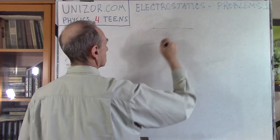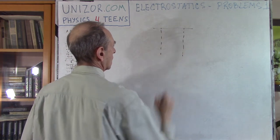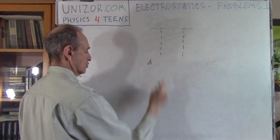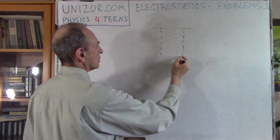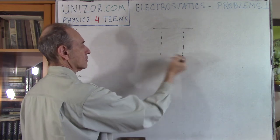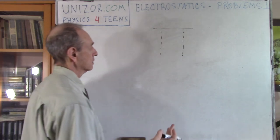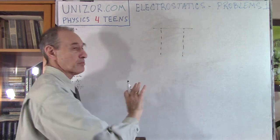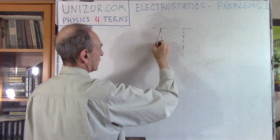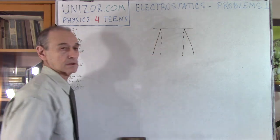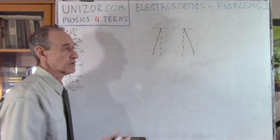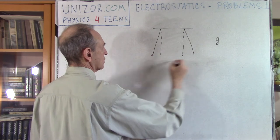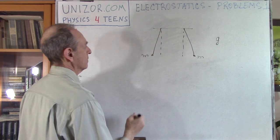Next — you have two point objects, each with charge Q, originally hanging on threads. Since they are both charged with the same sign — both positive or both negative — they will repel each other, so the threads will be at an angle from the vertical. We consider this on the surface of the Earth, so there is g, the acceleration of freefall. They also have mass — let's consider the same mass and the same charge.